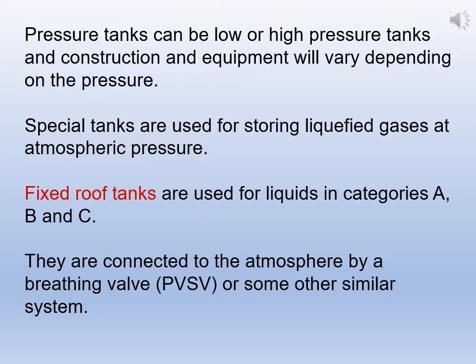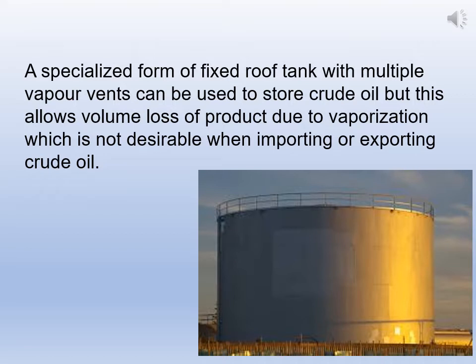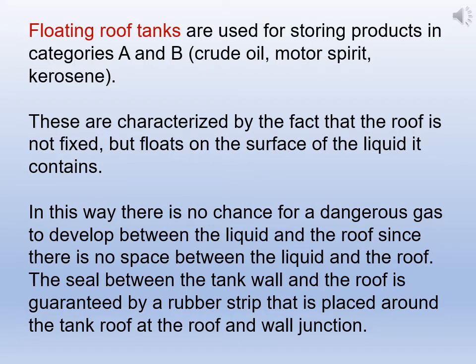A specialized form of fixed roof tank with multiple vapor vents can be used to store crude oil, but this allows volume loss of product due to vaporization, which is not desirable when importing or exporting crude oil. Floating roof tanks are used for storing products in Category A and B — crude oil, motor spirit, and kerosene. They are characterized by the fact that the roof is not fixed but floats on the surface of the liquid it contains. In this way there is no chance for a dangerous gas to develop between the liquid and the roof since there is no space between them. The seal between the tank wall and the roof is guaranteed by a rubber strip placed around the tank roof at the roof-and-wall junction.